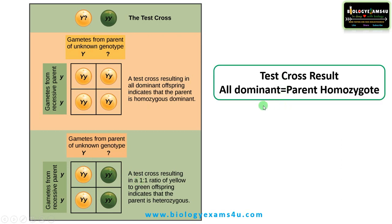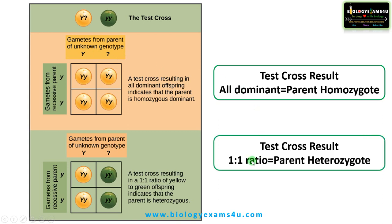In summary, if you are getting all dominant offspring in a test cross, then the parent is homozygous, that is capital Y capital Y. If the test cross ratio is 1:1 and both traits appear in equal ratio, then the dominant parent is heterozygous.